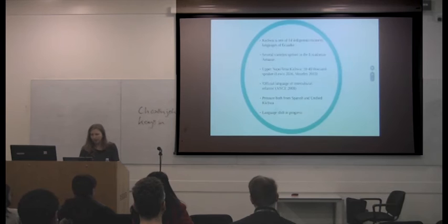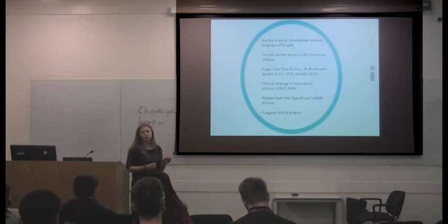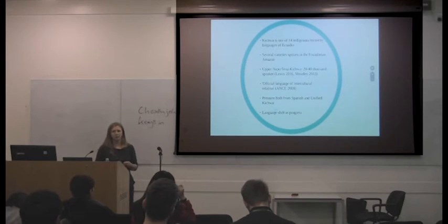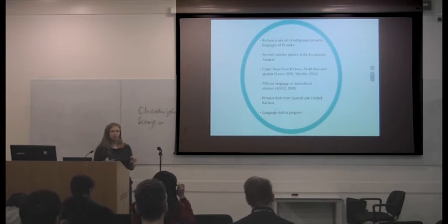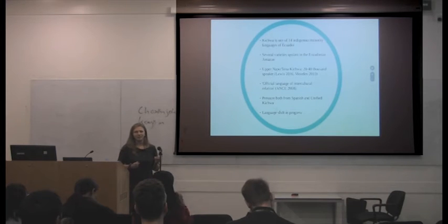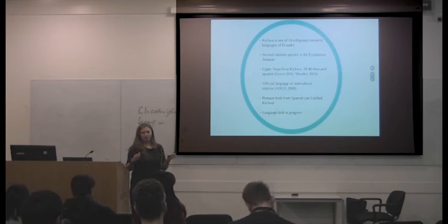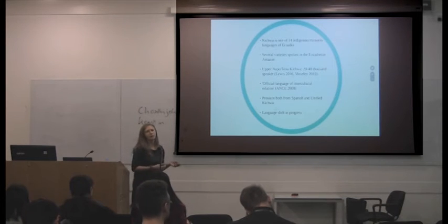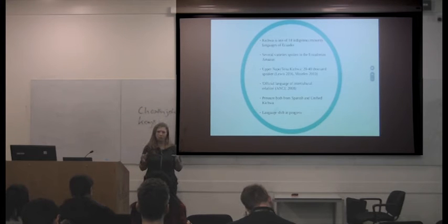Moving on, a little bit more about Quichua in Ecuador. It's one of 14 indigenous languages spoken in the country. There are several varieties spoken all over the country, about seven officially, and three of them are spoken in the Amazon. I've been saying Amazonian Quechua, though you might have seen references to my previous research where I said Tena Quechua, referring to Tena, the capital of the province where I've been doing my fieldwork. There are multiple problems with that name because there is also a river by the same name and the language is spoken 50 kilometers away from the capital.